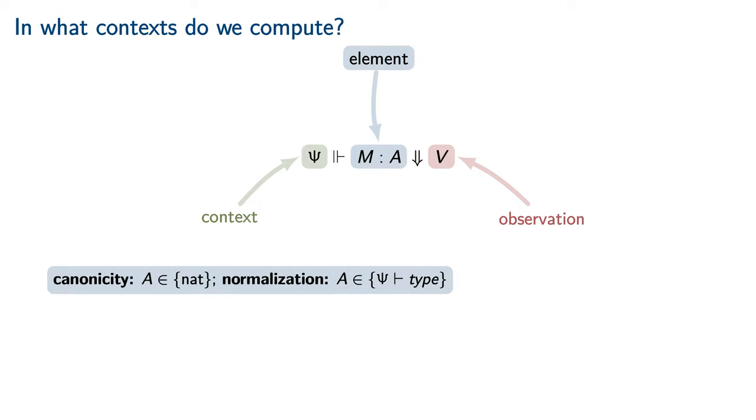For canonicity, we consider only elements of base type, such as the natural numbers. On the other hand, when proving normalization, we must consider elements of arbitrary type. Likewise, a canonicity result observes the numeral that a particular element of the natural numbers type computes to, whereas a normalization result must observe the full beta-iter normal form of an arbitrary element.